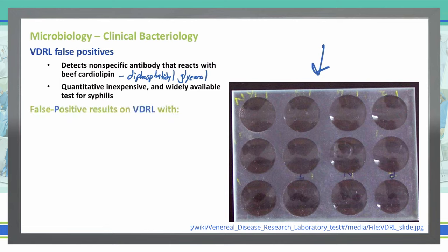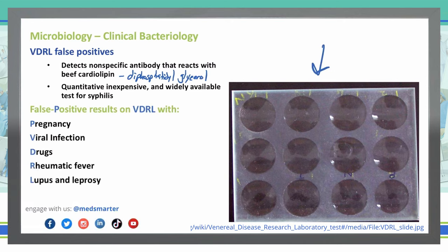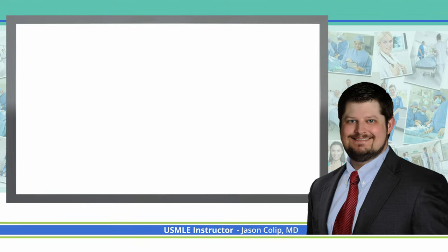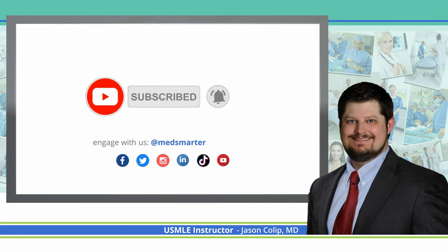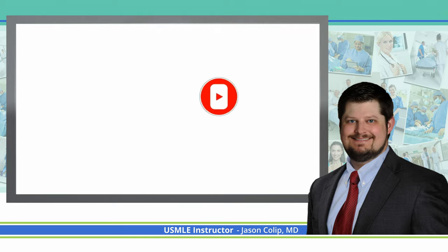You can remember the VDRL false positives using 'positive VDRL' as your memorization tool: P stands for pregnancy, V for viral infection, D for drugs, R for rheumatic fever, and L for lupus or leprosy. Viral infection most likely means measles or chicken pox. If you found this material helpful, please like and consider subscribing to the channel, and share this video so more people can benefit.